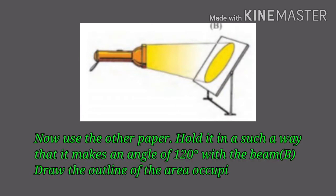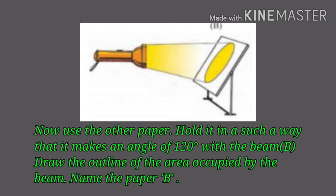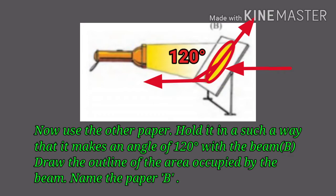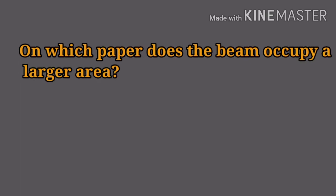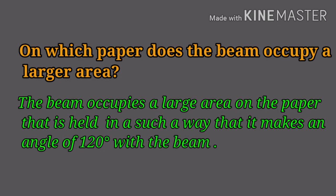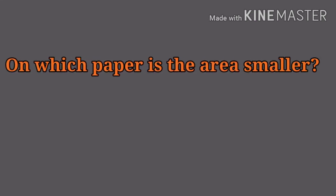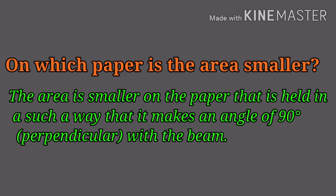Now use the other paper. Hold it in such a way that it makes an angle of 120 degrees with the beam, which is shown in Figure B. Draw the outline of the area occupied by the beam. Name the paper as B. Observe both papers A and B. Now tell, on which paper does the beam occupy a larger area? The beam occupies a large area on the paper that is held in such a way that it makes an angle of 120 degrees with the beam. On which paper is the area smaller? The area is smaller on the paper that is held in such a way that it makes an angle of 90 degrees with the beam.